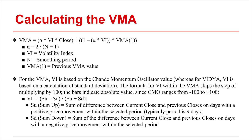SU is the sum of the difference between the current close and previous closes on days within the selected period with a positive or upwards price movement. SD is the sum of the difference between the current close and previous closes on days with a negative or downwards price movement within the selected period.